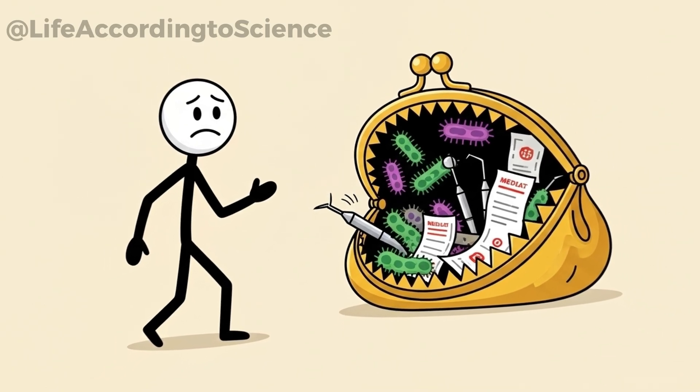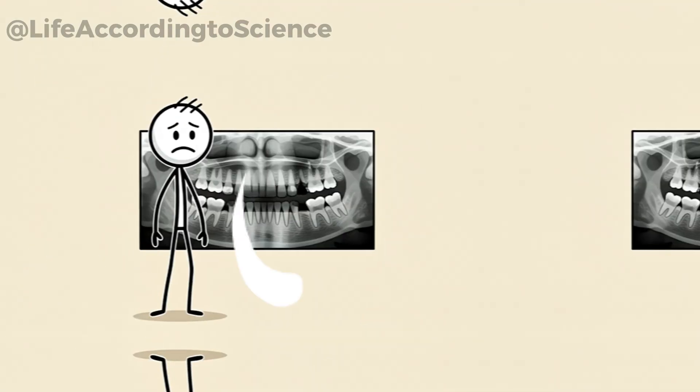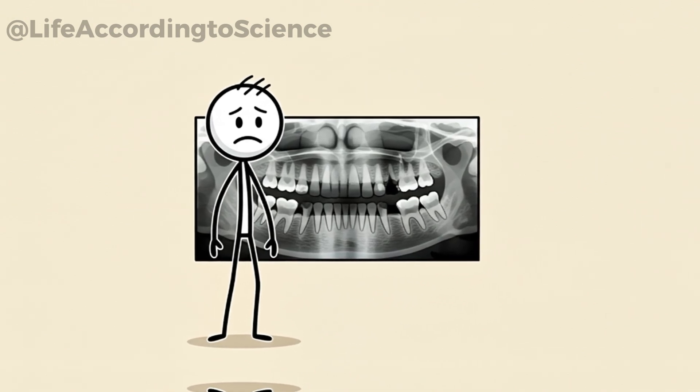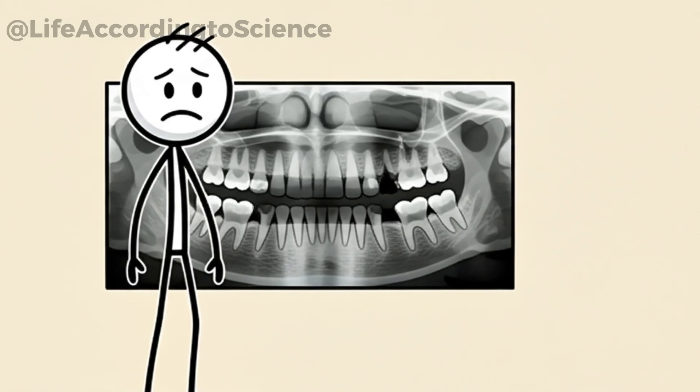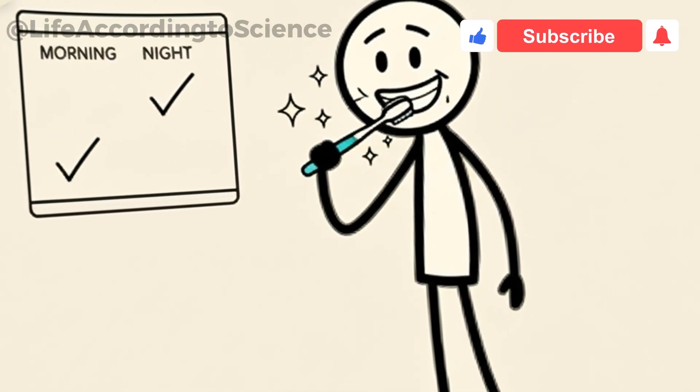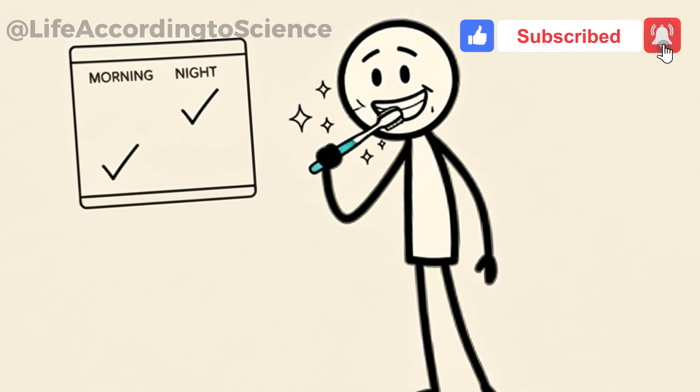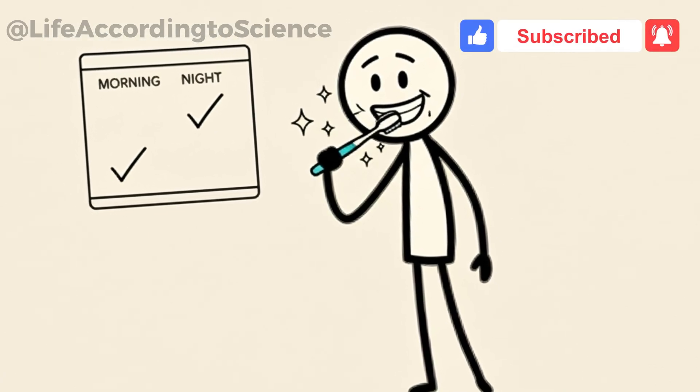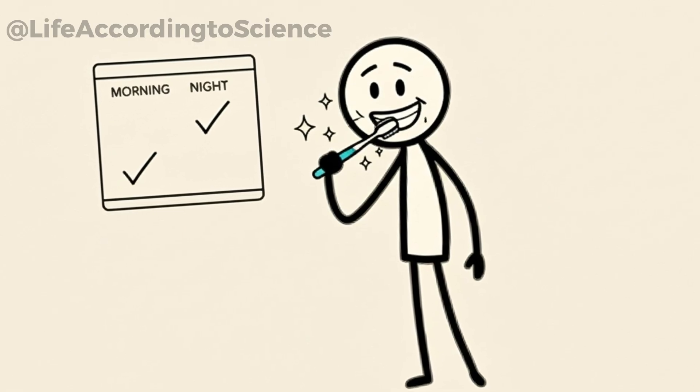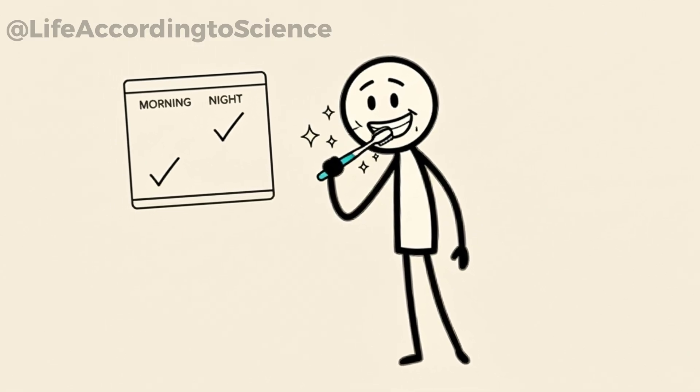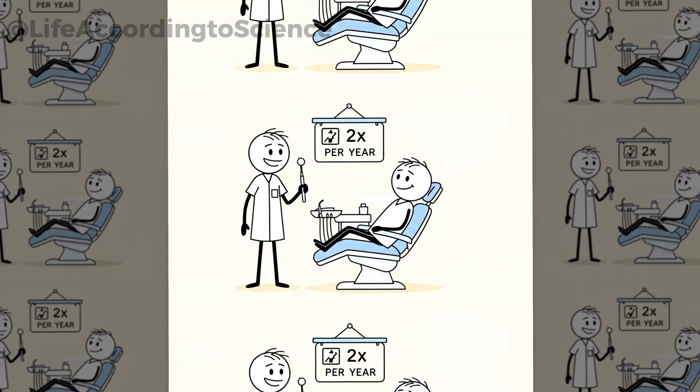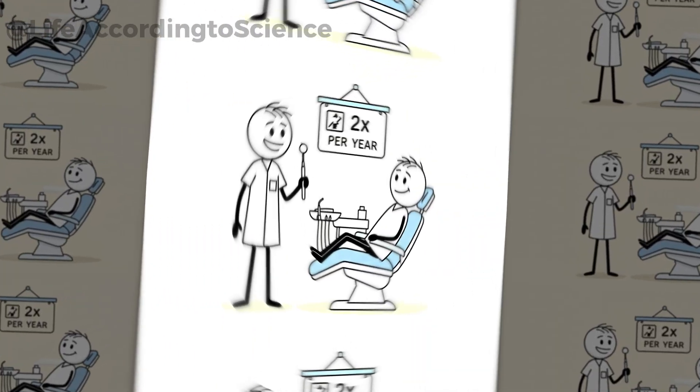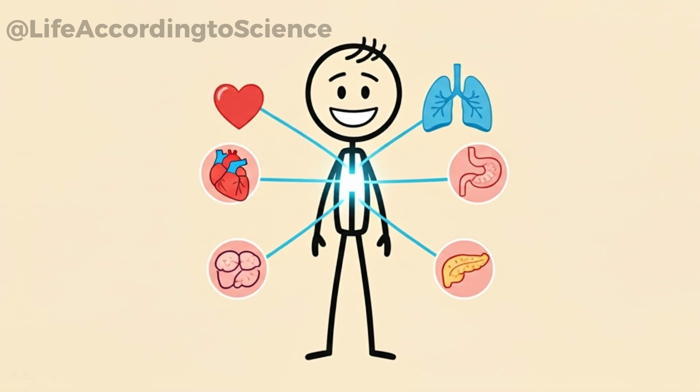After six months, the damage is undeniable. Tartar buildup, gum inflammation, possible cavities, and even early bone loss. Science leaves no room for doubt. Regular brushing is one of the simplest, most effective tools for protecting your entire body. Dentists recommend brushing twice a day with fluoride toothpaste, flossing daily, and visiting for a cleaning at least twice a year. These habits don't just keep your smile fresh, they reduce the risk of heart disease, diabetes complications, and respiratory infections.